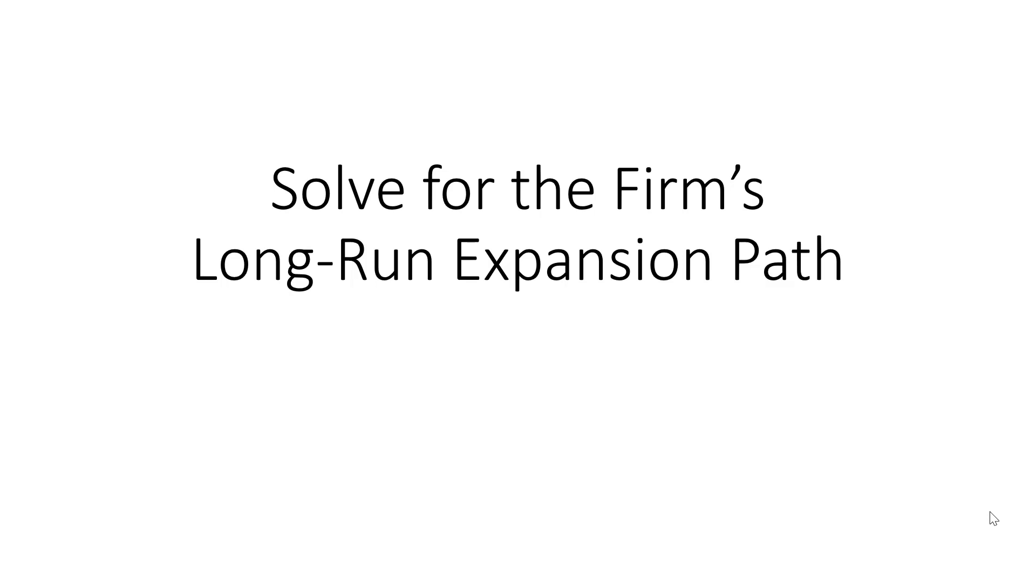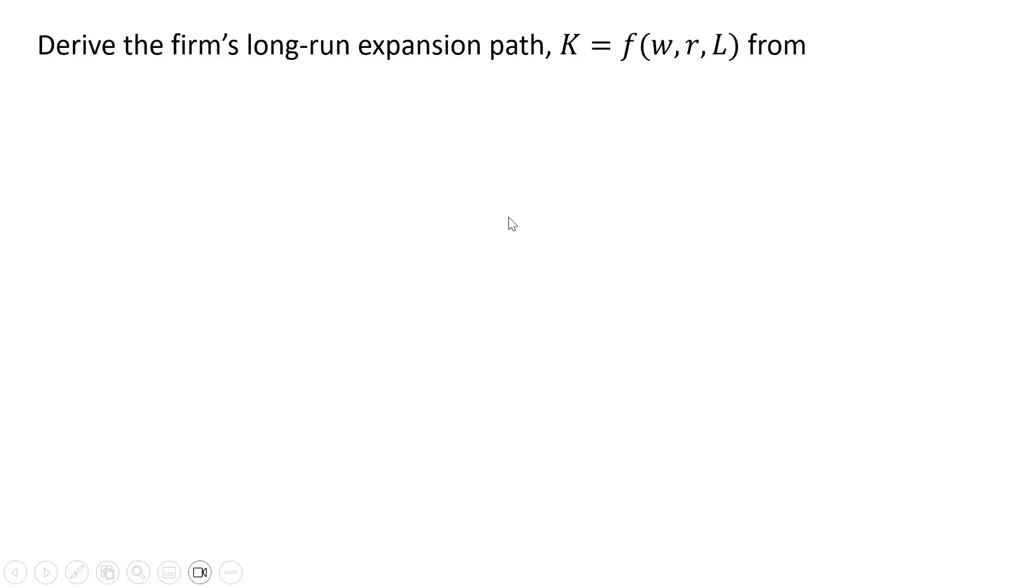Hello, in this video we're going to solve for the firm's long-run expansion path. Let's derive the firm's long-run expansion path. Here we're going to have capital K as a function of the wage rate, rental rate of capital, and units of labor. And we're going to derive this long-run expansion path from the following Cobb-Douglas production function.